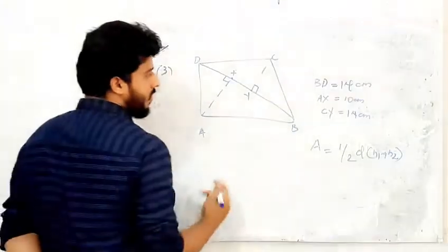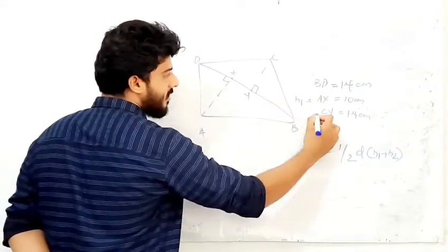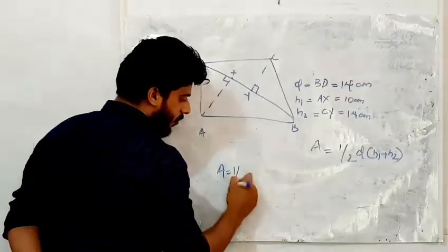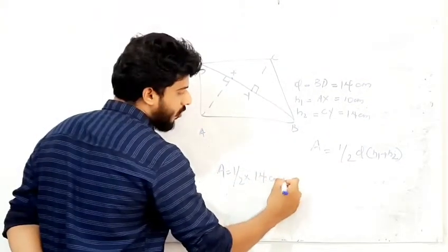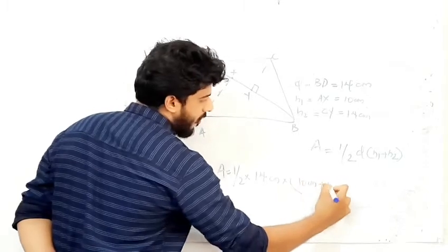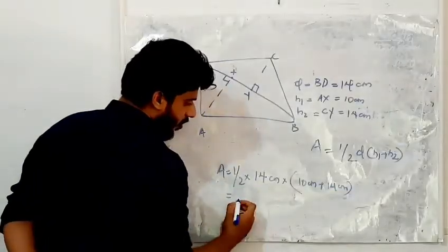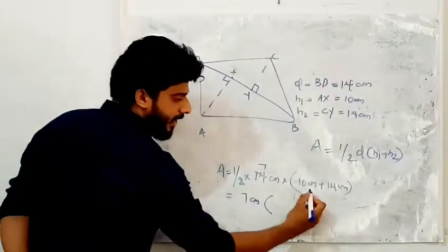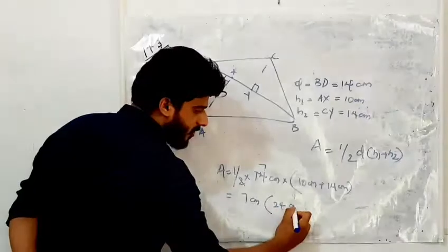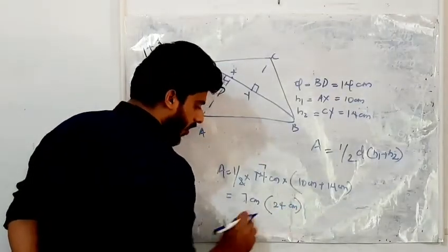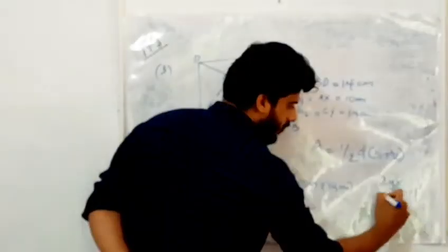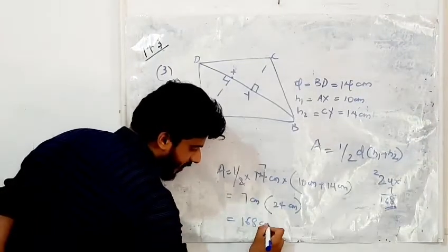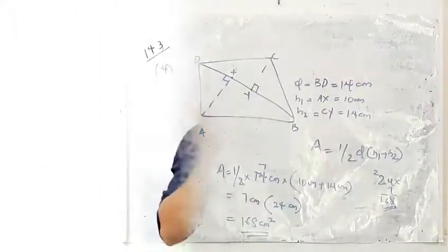Using the equation A = ½ × d × (h1 + h2), substituting d = 14, h1 = 10, h2 = 14: A = ½ × 14 × (10 + 14) = 7 × 24. So 7 × 24 = 168 cm². The area of the quadrilateral is 168 cm².